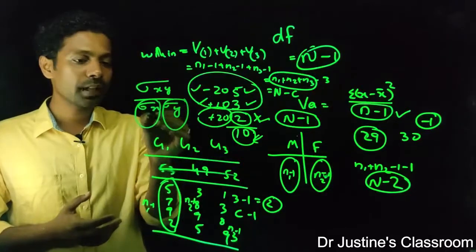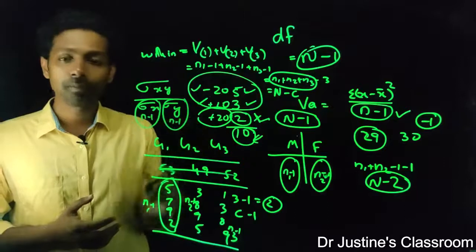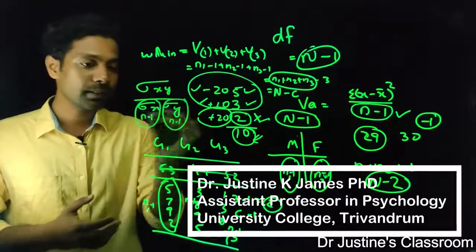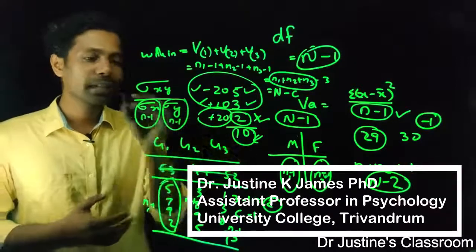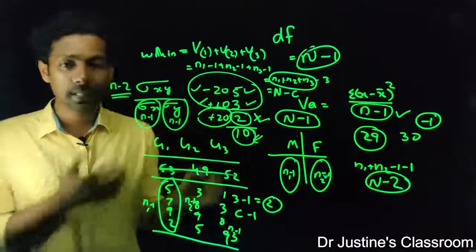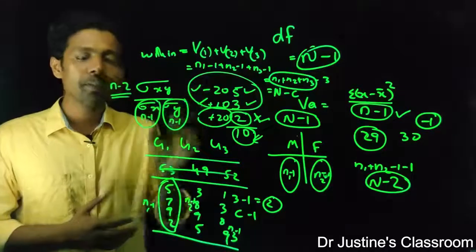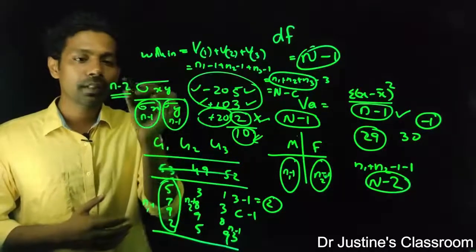I have n minus 1 here and n minus 1 here. So basically both n are the same, so you get n minus 2. This n here and this n is the same individual itself, and you have two values from where values have to be subtracted, so you'll get n minus 2.